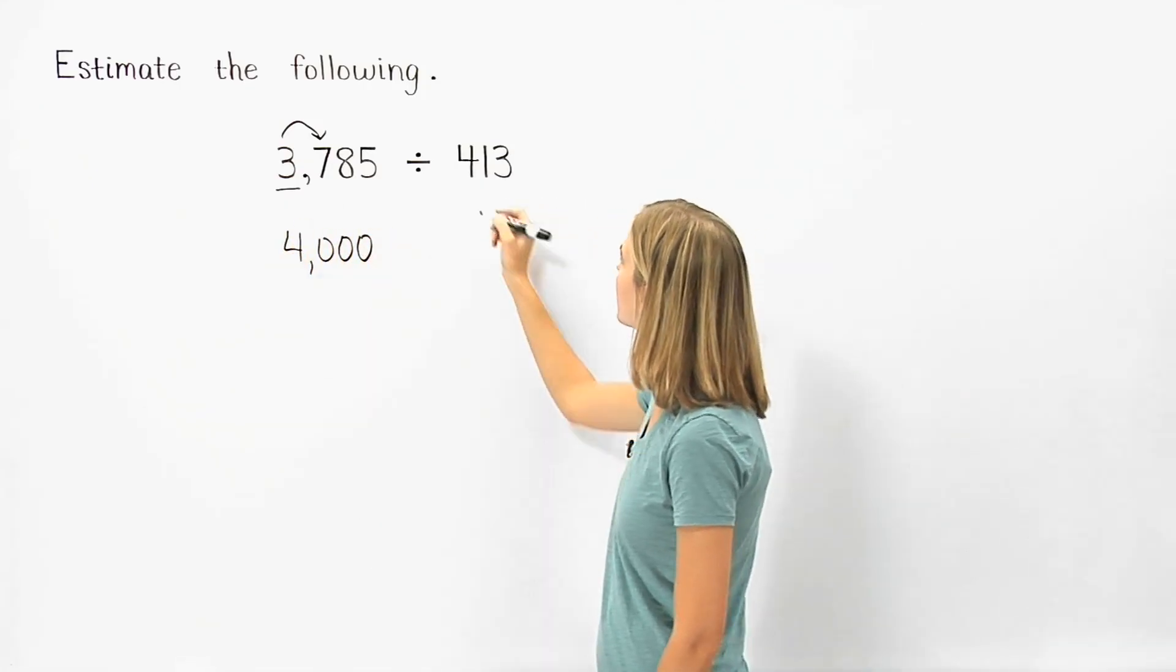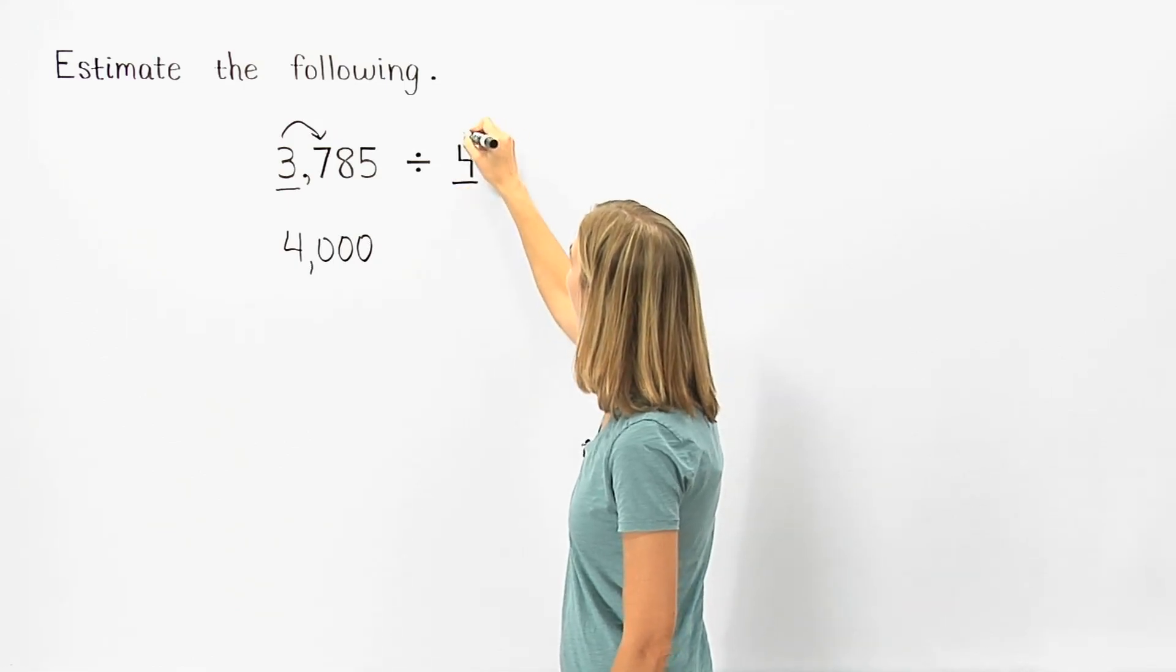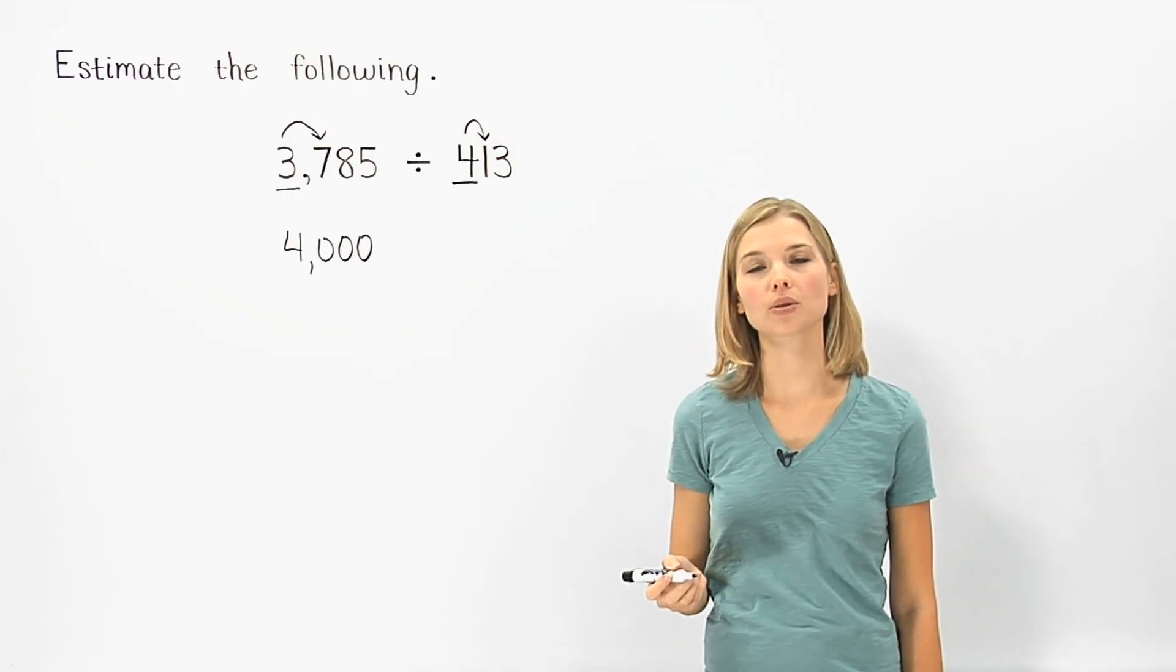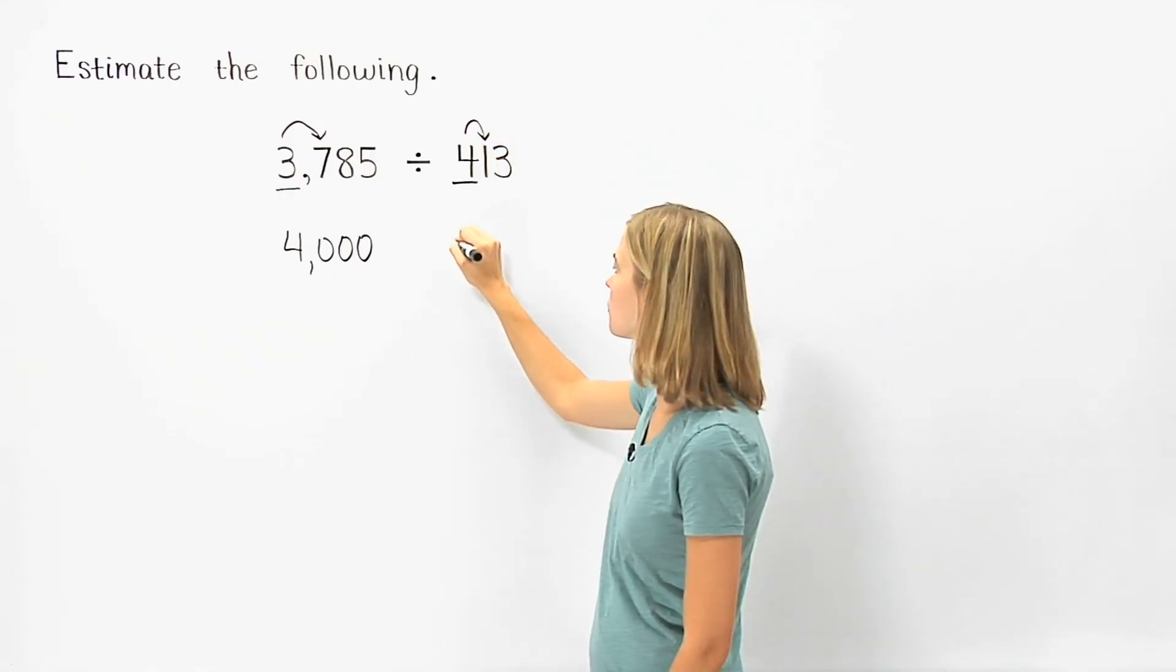Rounding 413 to the nearest hundred, the one to the right of the rounding place tells us to round down. So 413 rounds down to 400.